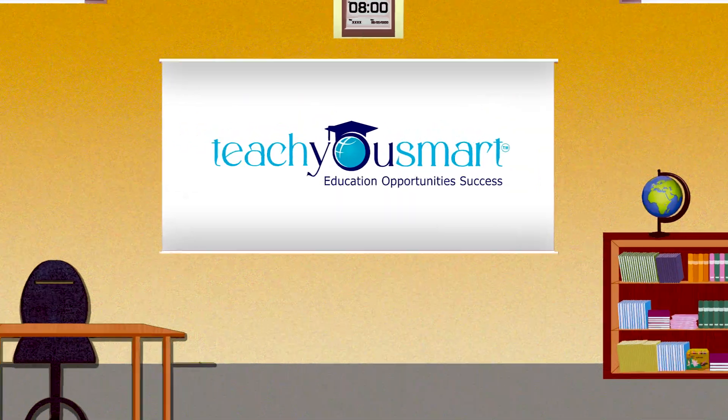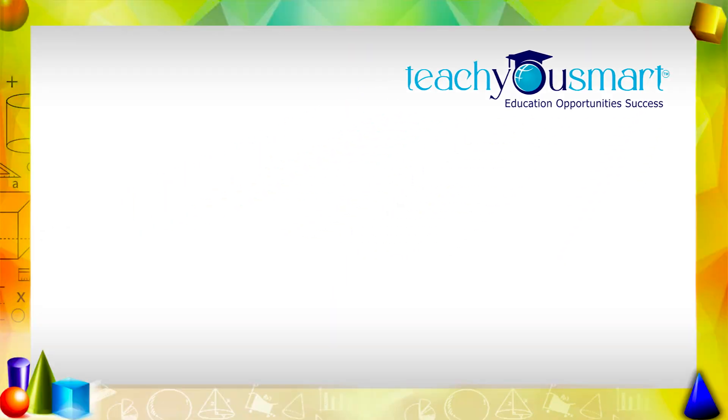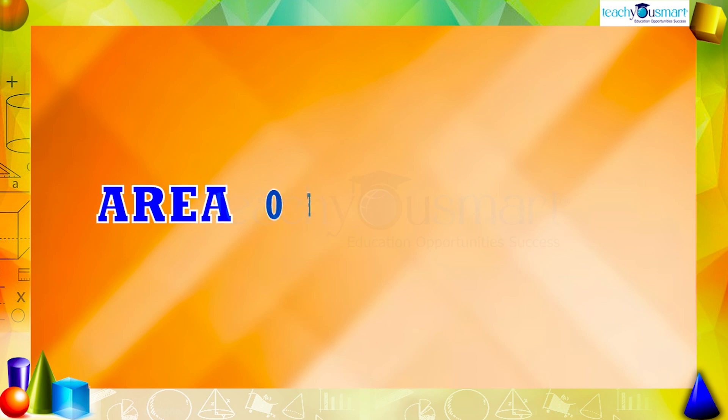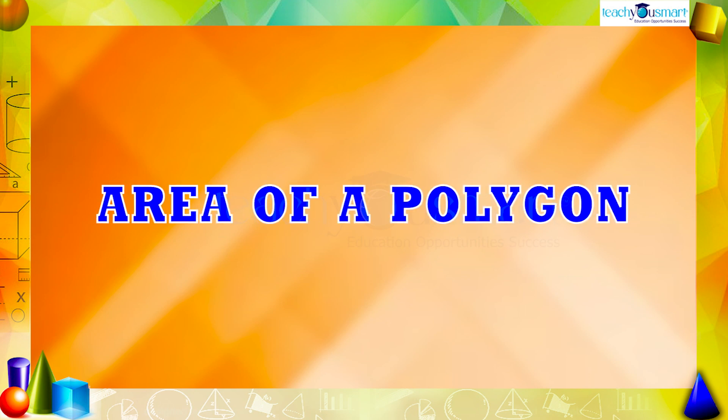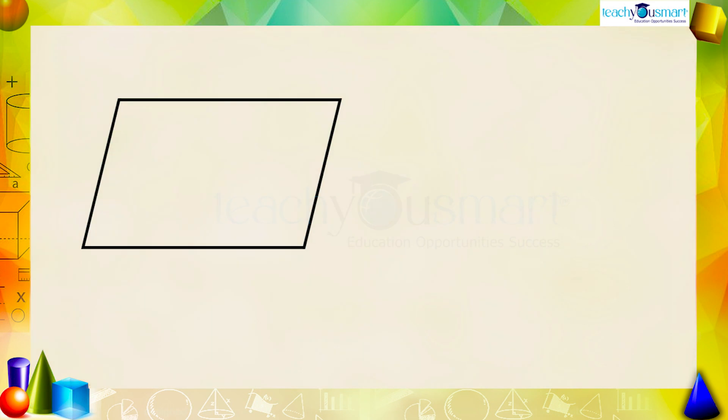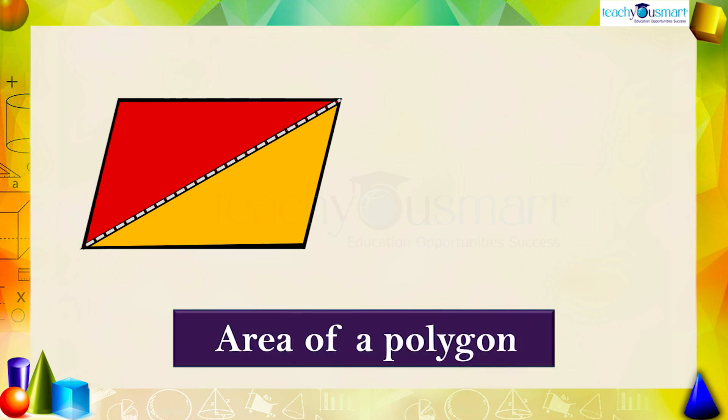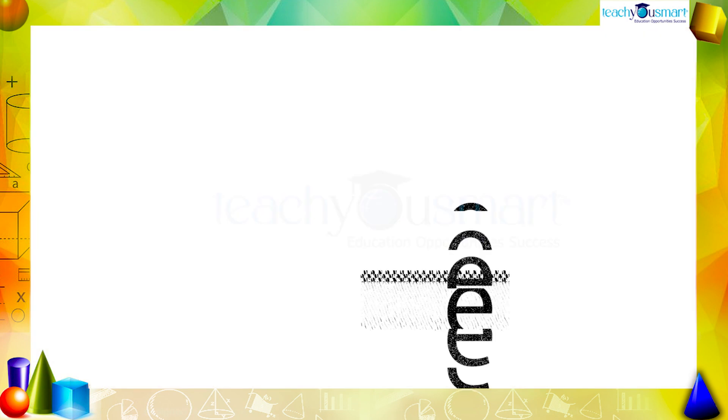Hello students, welcome to Teach You Smart. Let's continue our journey through the chapter mensuration. Today we are going to calculate the area of a polygon. We know that the area of a general quadrilateral can be found by dividing it into two triangles and adding the areas of these two triangles. Is it applicable to find the area of a polygon? Let's check.